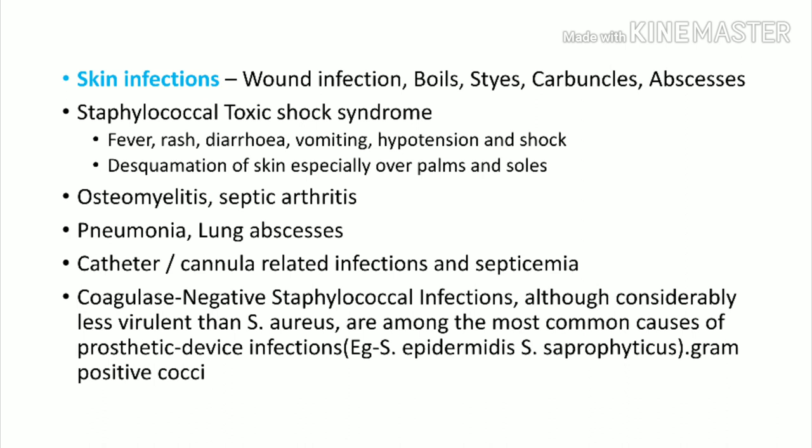Other conditions produced by staphylococcus include osteomyelitis — chronic bone infection — and septic arthritis. In the lungs, it can present with pneumonia or lung abscess. Remember that pneumonia produced by staphylococcus will be extensive, bilateral, with small cavity formation. Catheter-related infections — central line, peripheral line, cannula-related infections — are very common with staphylococcus. This is mainly MRSA, a hospital-acquired infection.